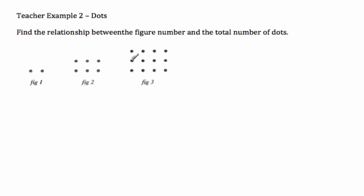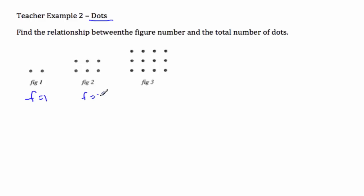It's Mr. Rupps and Mr. Cole and we are going to look for the pattern with dots today. We're not going to talk about communication so much, but we're more looking at how to find the pattern. We'll say that this is f being the figure, so this is f equal to 1, 2, and 3.